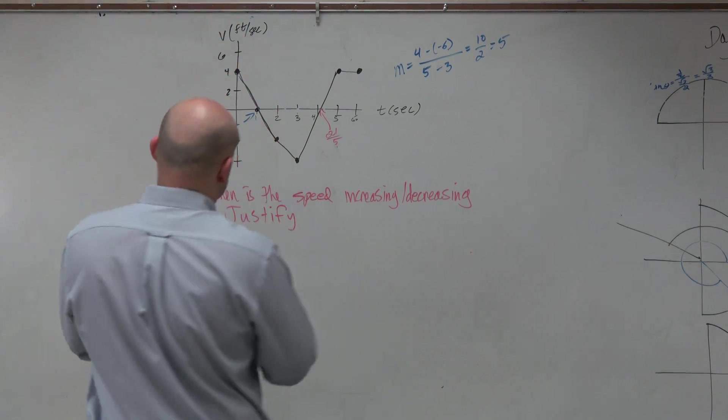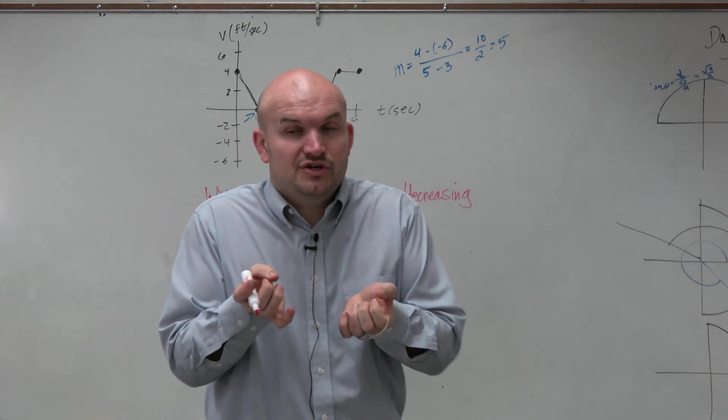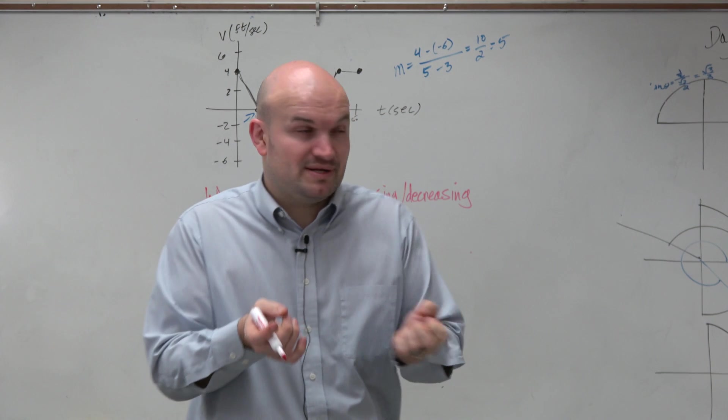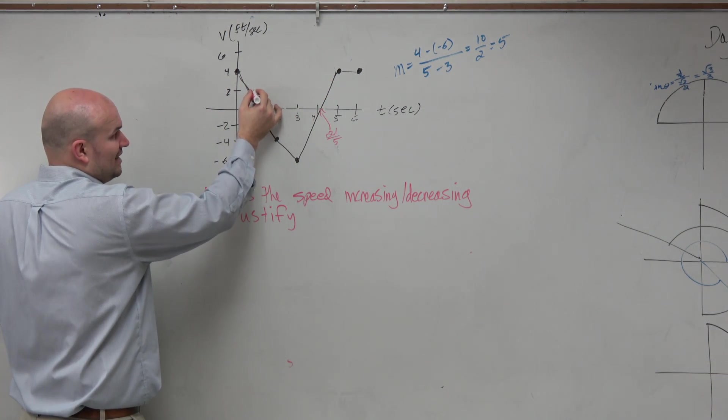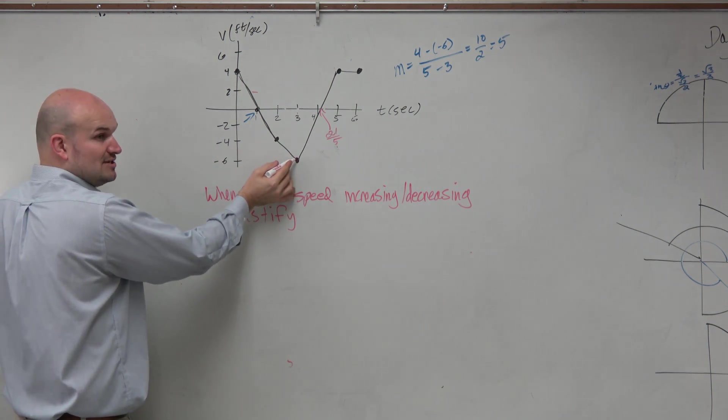So if I'm looking at this, what I'm going to do is I'm just going to put a little positive or negative next to the graph so I can identify what the slope is. So from here to here, from 1 to 2, the slope is negative. Do you guys agree? From here to here, the slope is also negative.